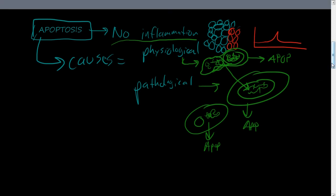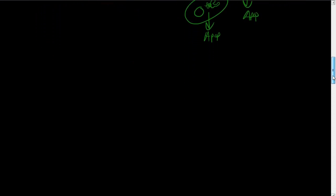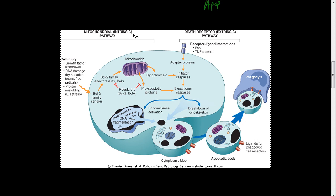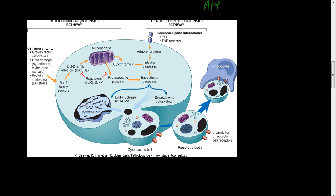There are two main pathways by which apoptosis occurs. To talk about this, I'm going to use a picture taken from Robbins Basic Pathology, 8th edition, by Kumar. There is the intrinsic pathway and the extrinsic pathway. First, we're going to talk about the intrinsic, or within, pathway.